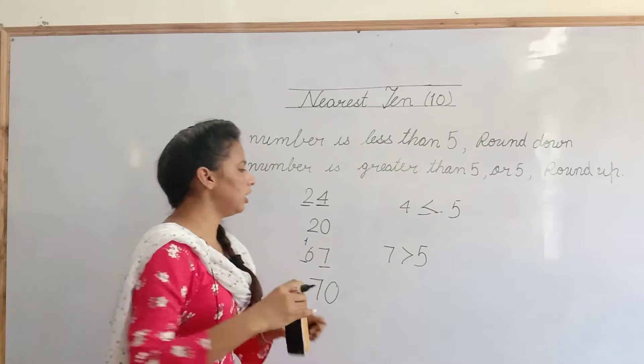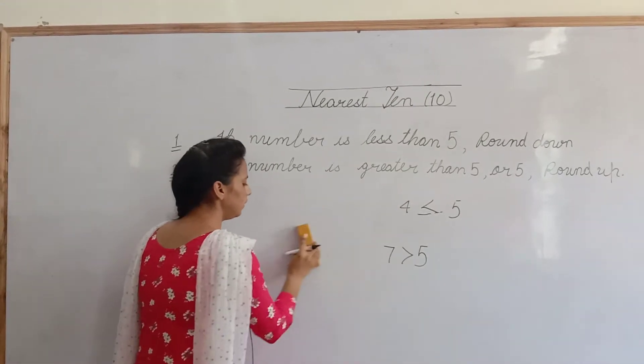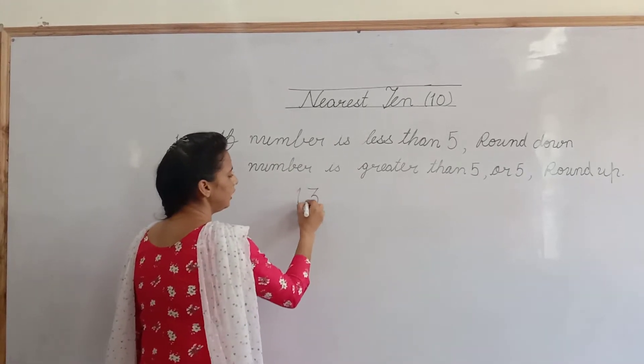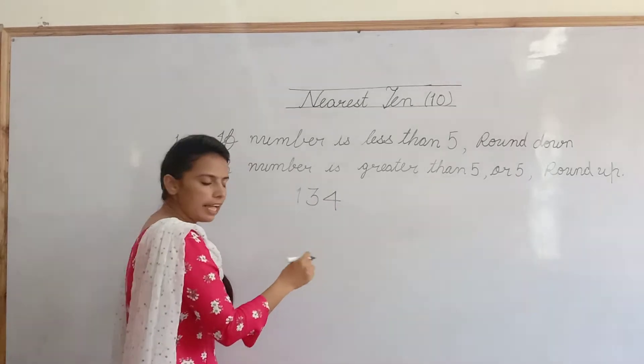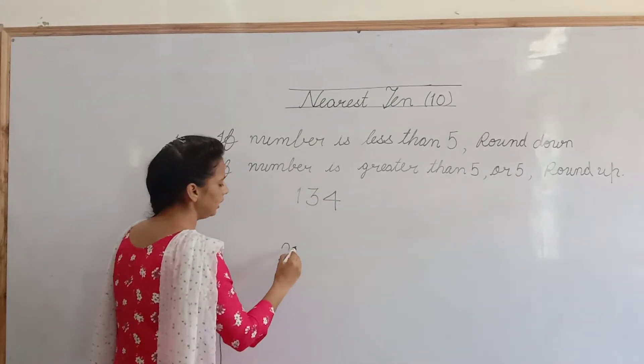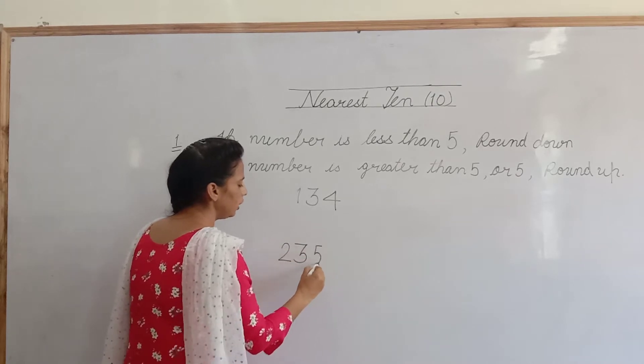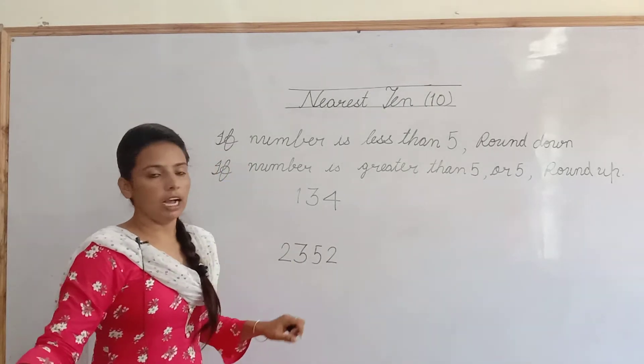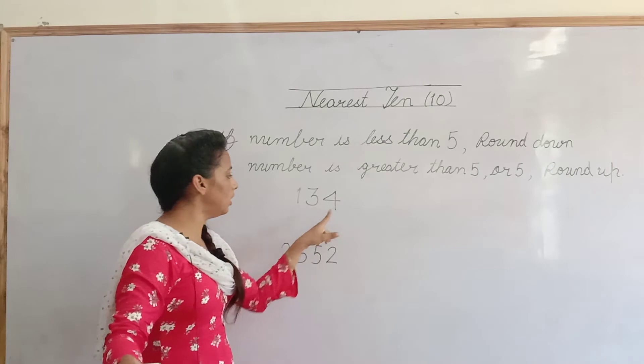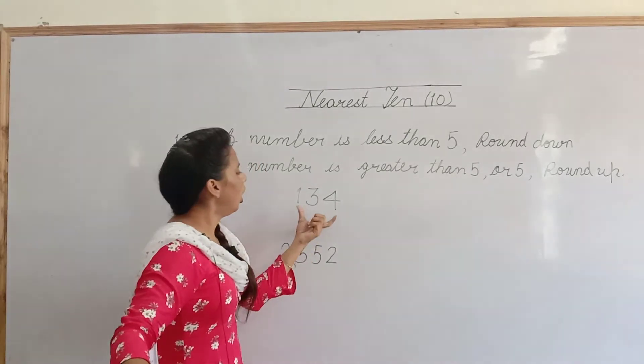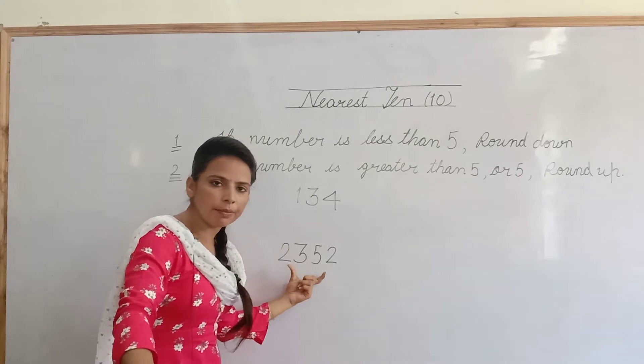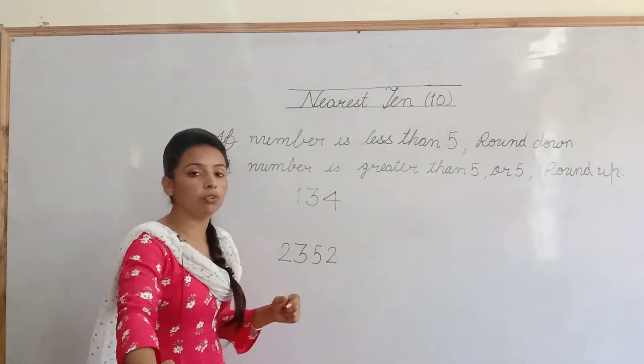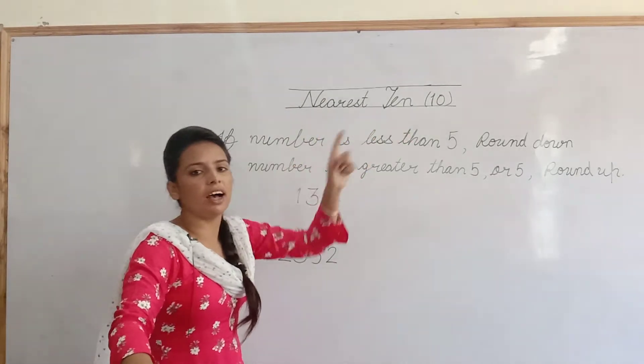اب یہی سم. اگر ہم 3 digit میں کریں تو ہمیں 3 digit number given ہے. اس کا estimate لگانا ہے. ہمیں like 134. ایسے 4 digit تک کا ہے ہمارا 3rd class میں. تو ہم 4 digit والا بھی ایک لے لیتے ہیں. 2,352. اب ان کا ہمیں estimate nearest 10 کا ہی دین ہے. نہ 100 کا دین ہے, نہ 1000 کا دین ہے. آپ لوگ کیسے کرتے ہو? اگر 3 digit یا 4 digit والی آپ نے دیکھی statement تو آپ اس کو 100 میں nearest کر دیتے ہو اور اس کو 1000 میں کر دیتے ہو. جو کہ wrong ہے.